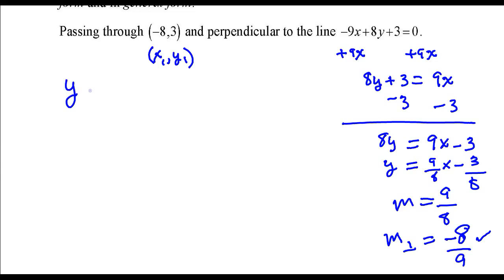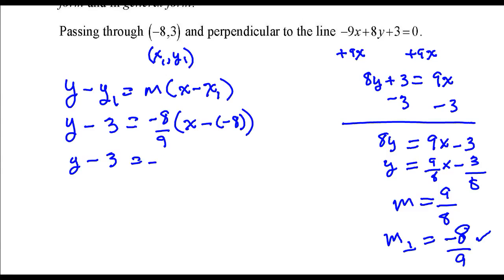In point-slope form, here's the form that we're going to use. This is the equation of a line in point-slope form. So, I just need to substitute those values in here. y minus 3 equals negative 8 over 9 times x minus a negative 8. Clean this up a little bit. y minus 3 is negative 8 over 9 times x plus 8. And that is the equation of the line in point-slope form.